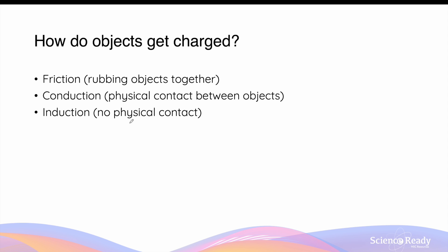We haven't actually explained how objects become charged. There are three main ways: through friction — rubbing objects together; through conduction — physical contact between a charged and uncharged object; or induction — where one charged object influences the charge of another placed in close proximity without physical contact.